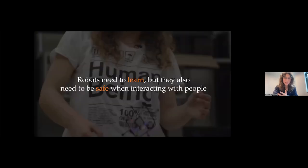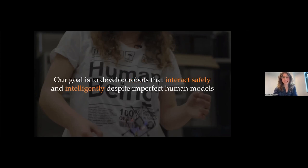So there's this tension that we have a lot in human-robot interaction, where robots need to learn about people in order to effectively interact with them, but these robots also need to be safe. Our goal is to develop robots that can interact safely and intelligently with humans, despite these imperfect human models.